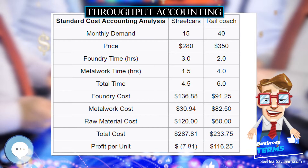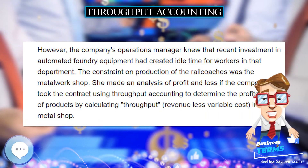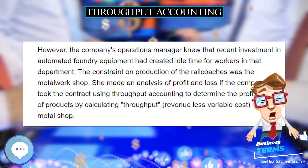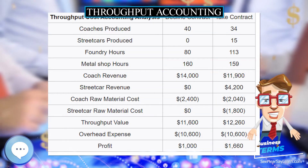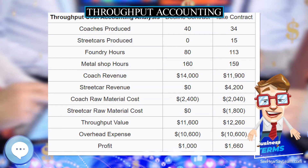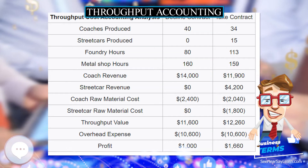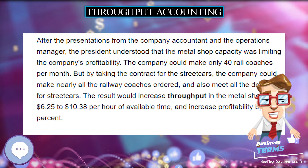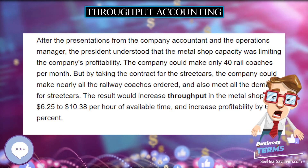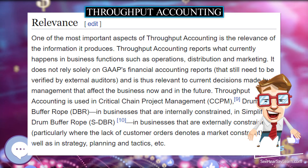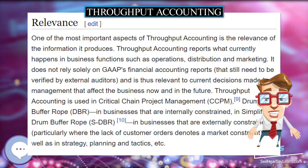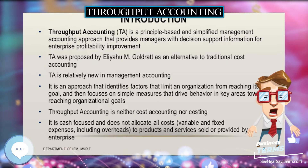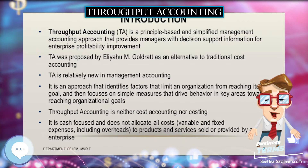Throughput accounting is used in critical chain project management (CCPM), drum buffer rope (DBR) in businesses that are internally constrained, in simplified drum buffer rope (SDBR) in businesses that are externally constrained — particularly where the lack of customer orders denotes a market constraint — as well as in strategy, planning and tactics, etc.